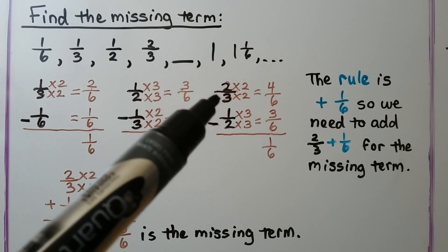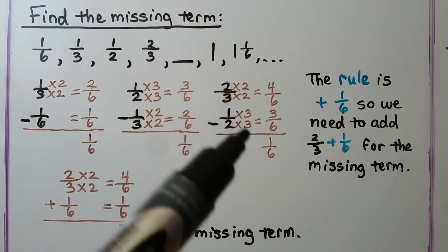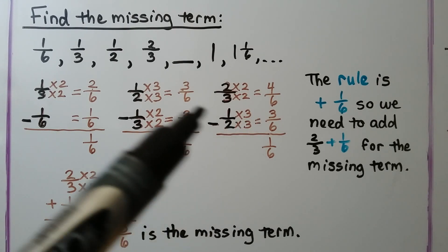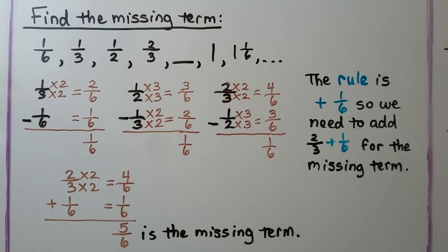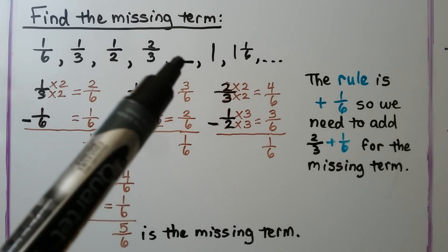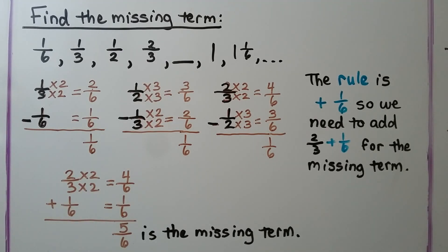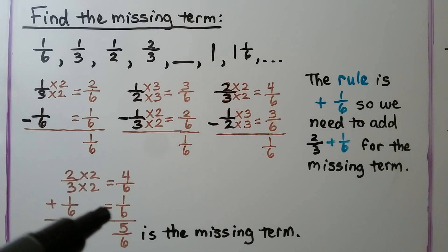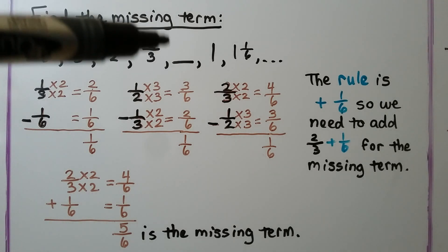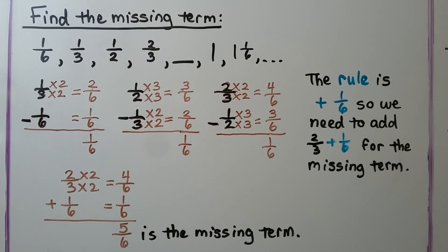We do two thirds, which is four sixths, and subtract three sixths — rewritten with six as a denominator, we get one sixth. So the rule is plus one sixth. We need to add two thirds plus one sixth for the missing term: two thirds plus one sixth, giving both a six as a denominator, that's four sixths plus one sixth — that's five sixths. The missing term must be five sixths.